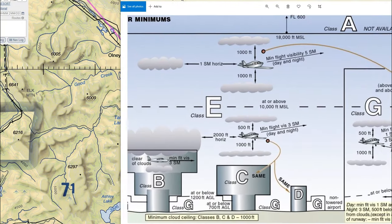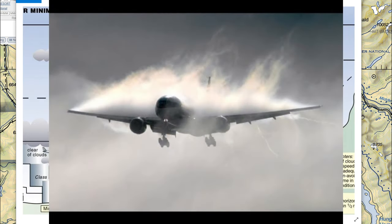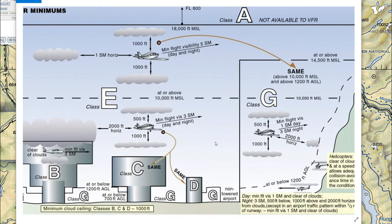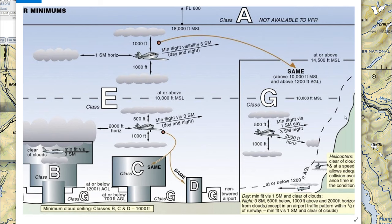Now we're going to talk about VFR flight rules regarding clouds within various airspaces, because clouds play a huge part in our ability to find and land at an airport. On screen you can see cloud restriction requirements for different airspace classes. Class A airspace is not for VFR flight at all — anything above 18,000 feet is for IFR. Pause the video if you need to study those cloud restrictions.